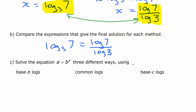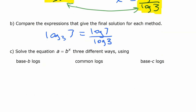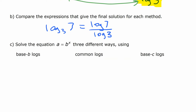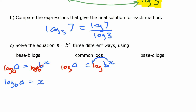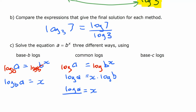We're going to do that again with variables to show it works in general. For the equation a equals b to the x, if we solve with base b logs — take log base b of both sides — it cancels out and x equals log base b of a. If we solve with base 10 logarithms, take the log of both sides, use the power rule to put x in front, getting x times log of b equals log of a, then divide both sides by log b to get log a divided by log b.